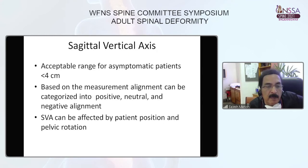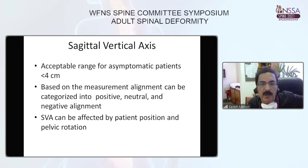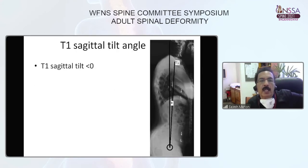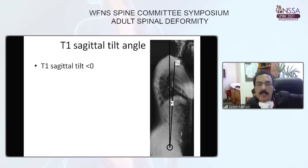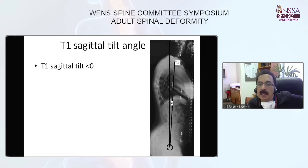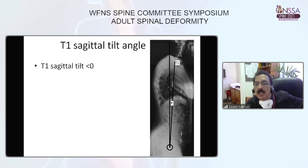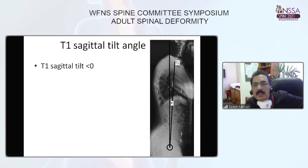One should always remember that SVA can be affected by patient position and pelvic rotation. The T1 sagittal angle is the angle subtended by a vertical line drawn from the center of the femoral head and another line from the center of the femoral head to T1; this should be somewhere around zero.